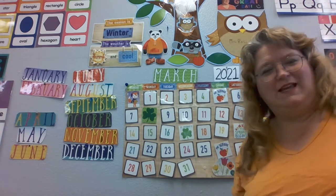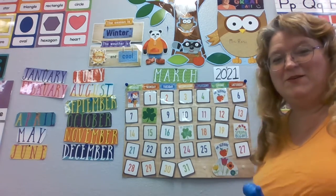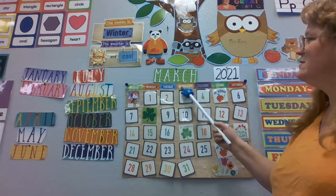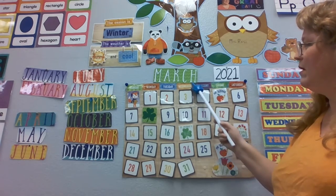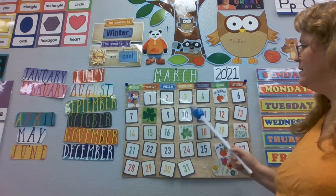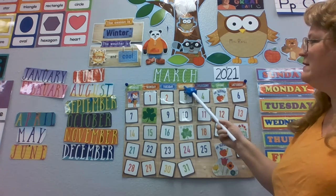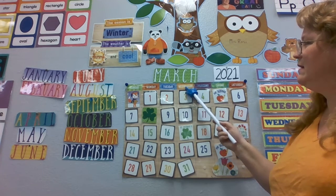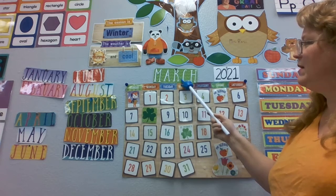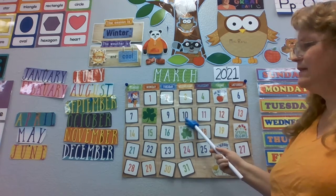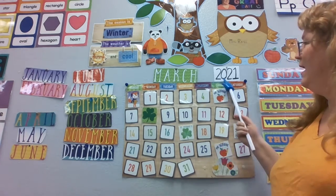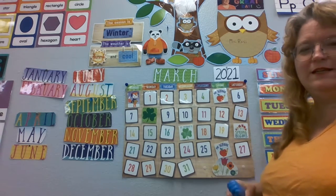Let's say that again just for the fun of it. Ready, set, go! Today is Wednesday, March 10th 2021. Wednesday is the day of the week, March is the month of the year, the 10th is the date, and 2021 is the year.